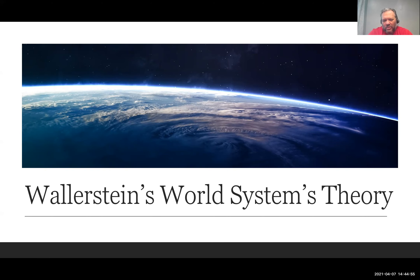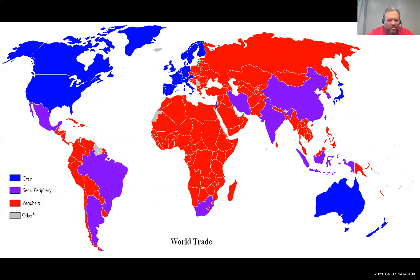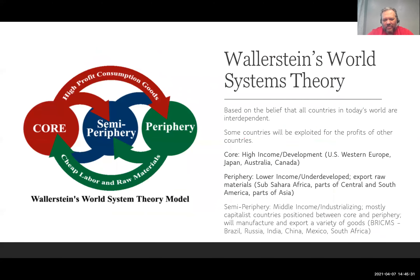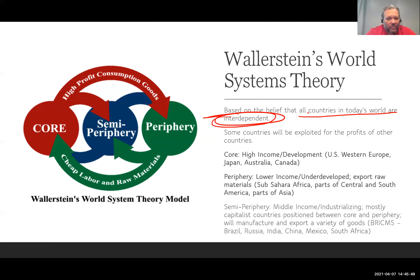Then we have Wallerstein's world systems theory. He mentioned the core and periphery before. Looking at the GNI map, you can start to guess what core and periphery mean. The US, Canada, Western Europe, Northern Europe, and Australia are core countries. China, India, Brazil, and Mexico are semi-periphery. Wallerstein believed all countries today are interdependent — if one has a problem, it affects others. He also believed some countries would be exploited for profit by the wealthier countries.